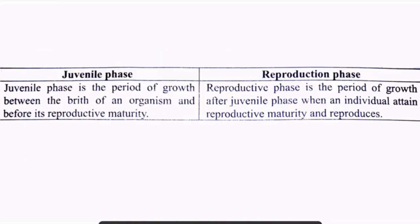Moving further, there are two phases in the life cycle of any plant or organism. The first one is the juvenile phase. The juvenile phase is the period of growth between the birth of an organism and before its reproductive maturity — meaning in this phase, only growth of the organism takes place.